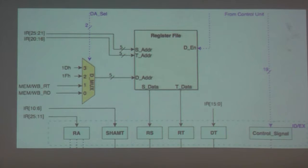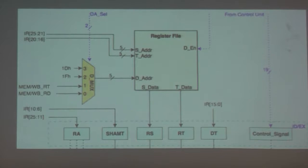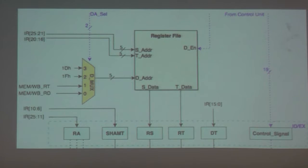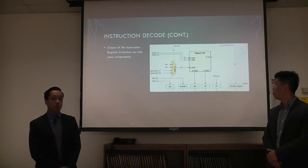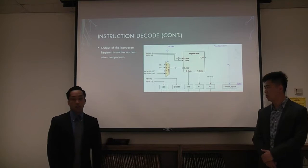All that data gets saved to specific registers. The RA register saves all the addresses for an instruction — the S address, R address, T address, and D address. The shift amount is a 5-bit value. Data from the register files is saved to the RS and RT registers. The immediate value is saved to the DT register, and all control signals generated from the control unit are saved into the control signal register.